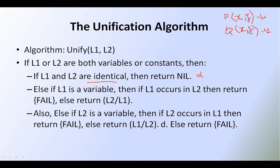For example, P is acting as a variable occurring inside Q of X comma Y — L1 occurs in L2 — so then we return fail; else return Q of X by P of X comma Y. Similarly, if L2 is a variable and L2 occurs in L1, then return fail; else return L1 by L2, that is P of X comma Y by Q of X comma Y.